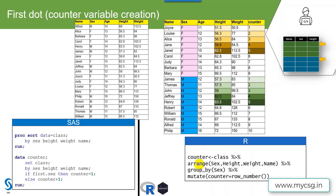The arrange function, as we have seen in previous videos, can be used to sort the records based on our requirement. Here I am sorting the class dataset based on the same set of by-variables: sex, height, weight, and name. After that, to separate the counter variable creation within each sex group, I am grouping the records based on the values present in the sex variable — which is equivalent to the by statement in SAS.